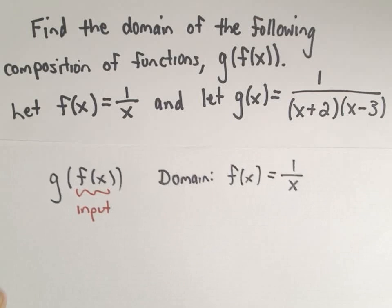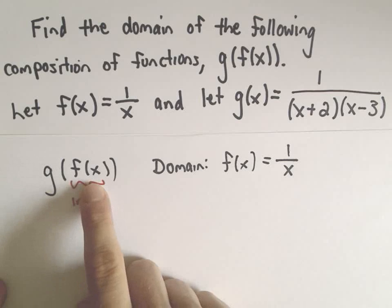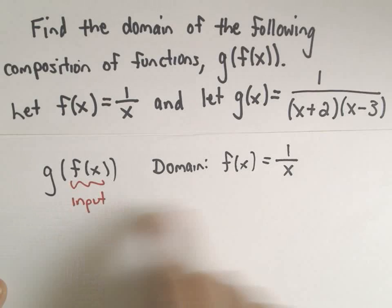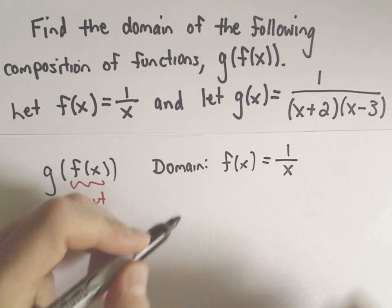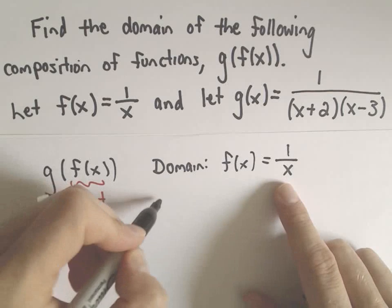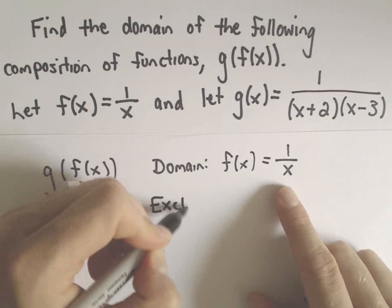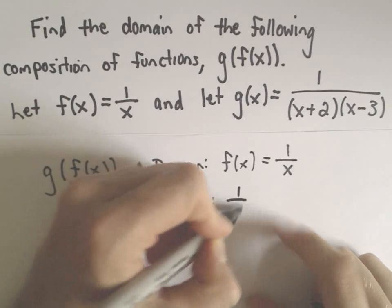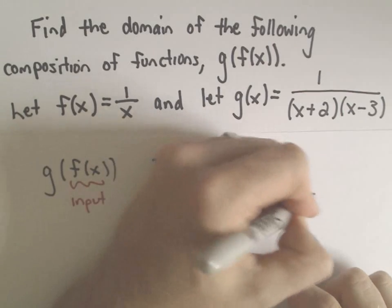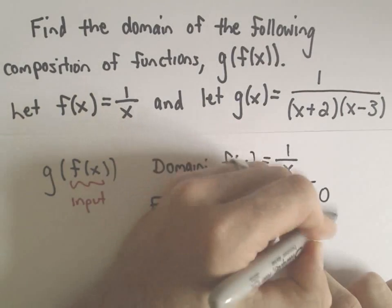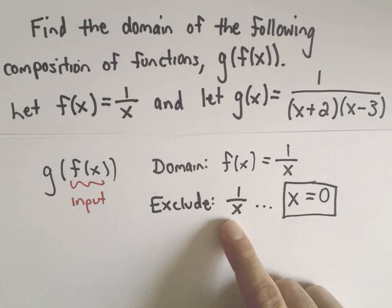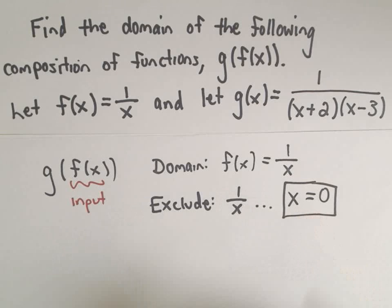So again, g of f of x. f of x, that's the input function, the inside function. f of x is 1 over x. We know one of the restrictions on the domain is that we can't divide by 0. So we have to exclude, if we think about the function 1 over x, the value x equals 0. That will not be in the domain because clearly you get 0 in the denominator. So that's one value that I already know is out of the domain.